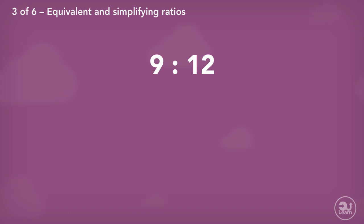Looking at this ratio, what common factor can both the values be divided by? Both have a common factor of three. Therefore, both numbers can be divided by three. We divide both values by three and we are left with the ratio three to four.